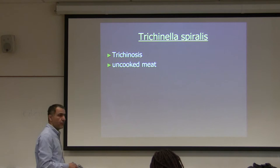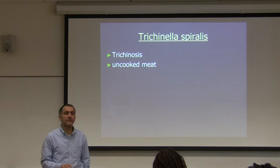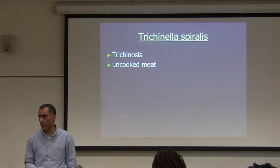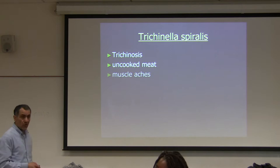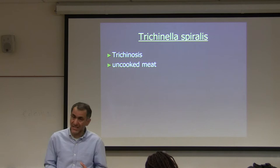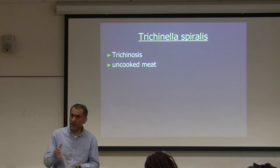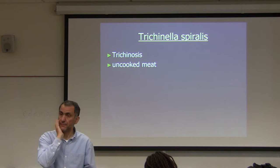We humans get Trichinella by eating uncooked meat. These parasites love skeletal muscle — not the adult, but the juvenile stages go to skeletal muscles. The adults live in the intestine and release larval stages that eventually go to skeletal muscle and form what's called the nurse cell.